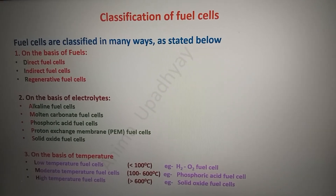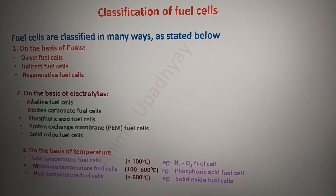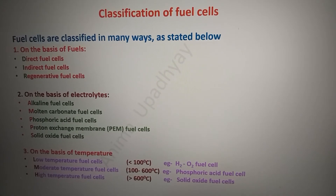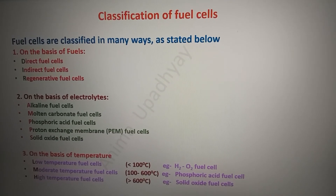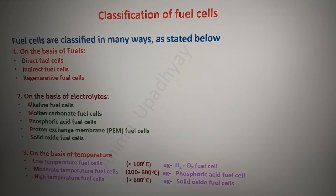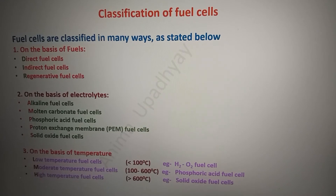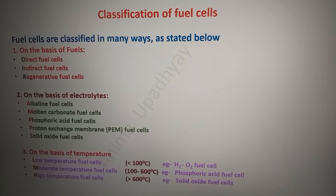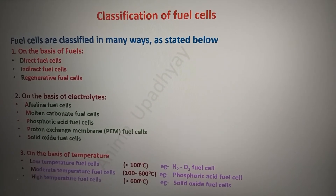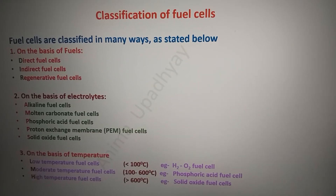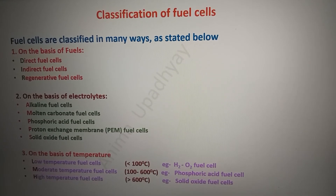On the basis of temperature, fuel cells are classified into three types: low temperature, moderate temperature, and high temperature fuel cells. When the fuel cell works below 100°C, it is called a low temperature fuel cell — an example is the hydrogen-oxygen fuel cell. When the working range is between 100 and 600°C, it is called a moderate temperature fuel cell — an example is the phosphoric acid fuel cell. High temperature fuel cells work above 600°C and use solid electrolytes, such as solid oxide fuel cells.